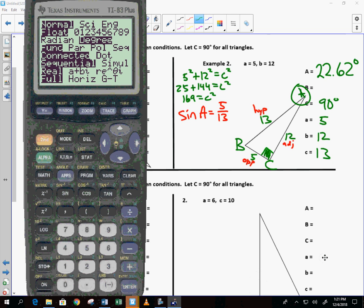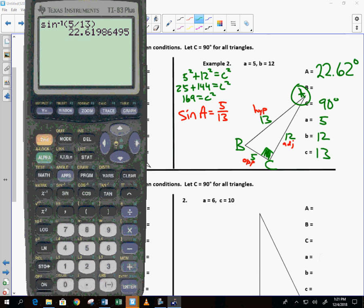Can I now find angle B? How? All three angles have to add to? So I take 180. I subtract off 90. I subtract off 22.62. What do I get? 67.38. The triangle is solved.